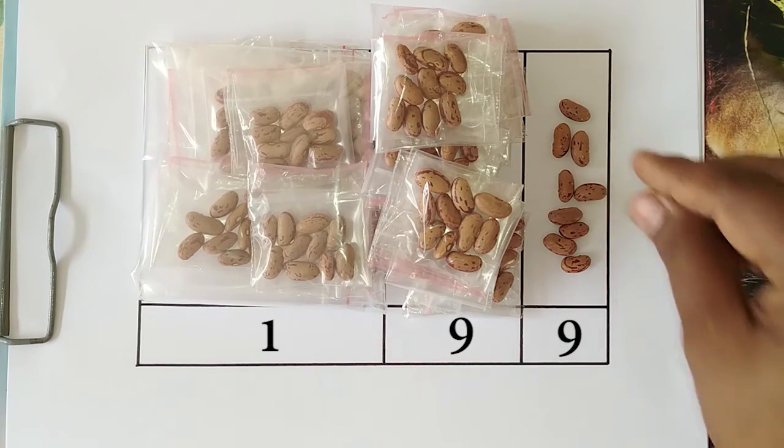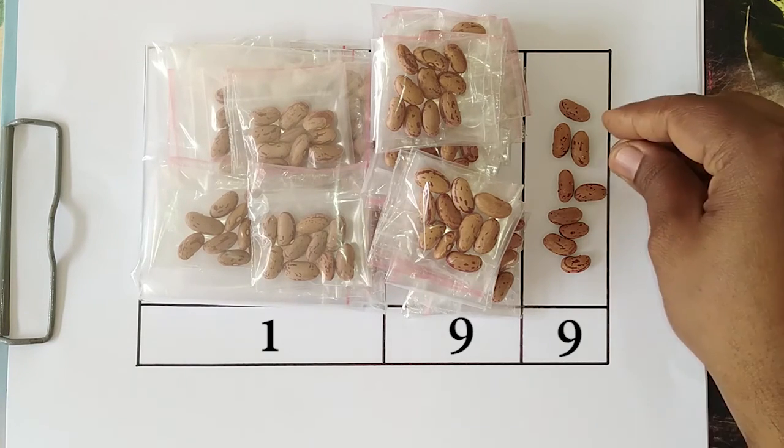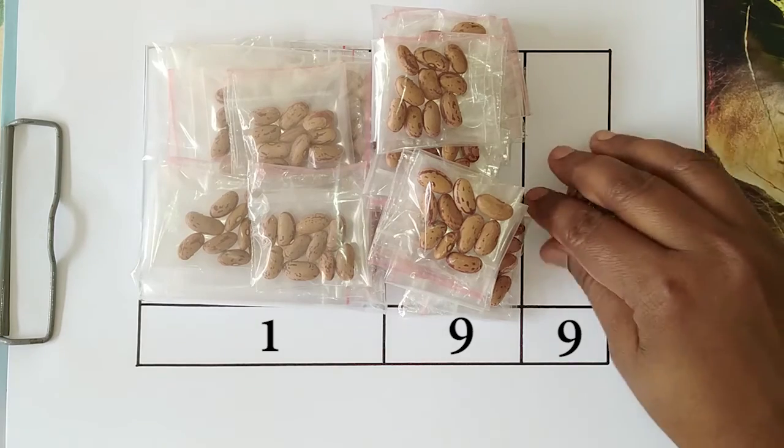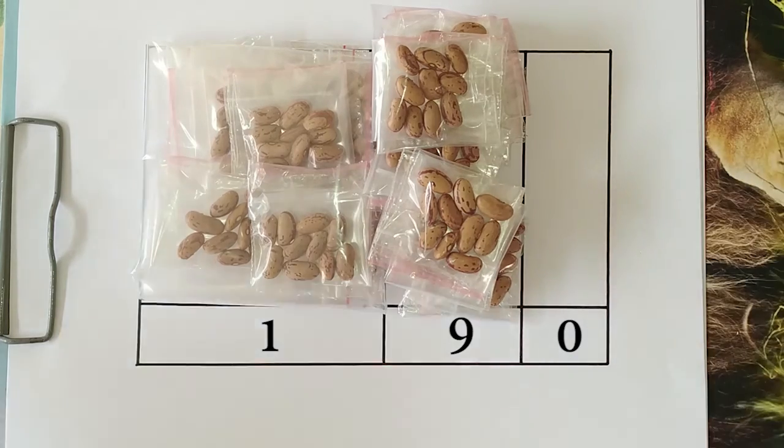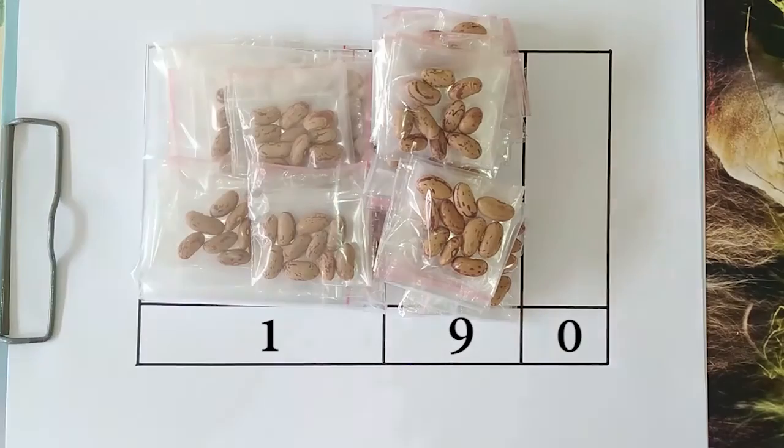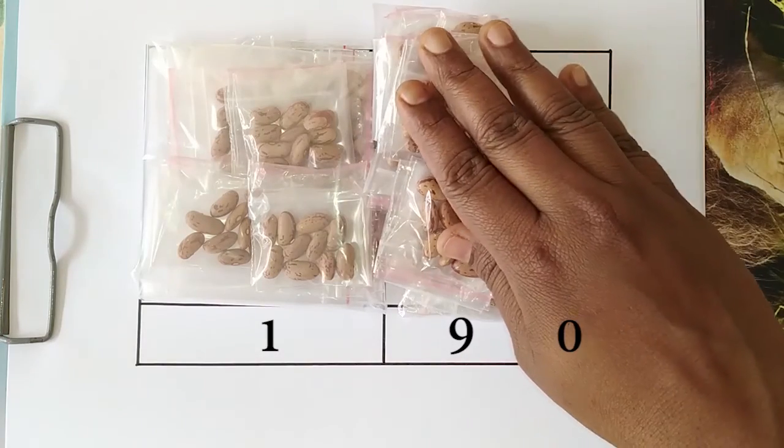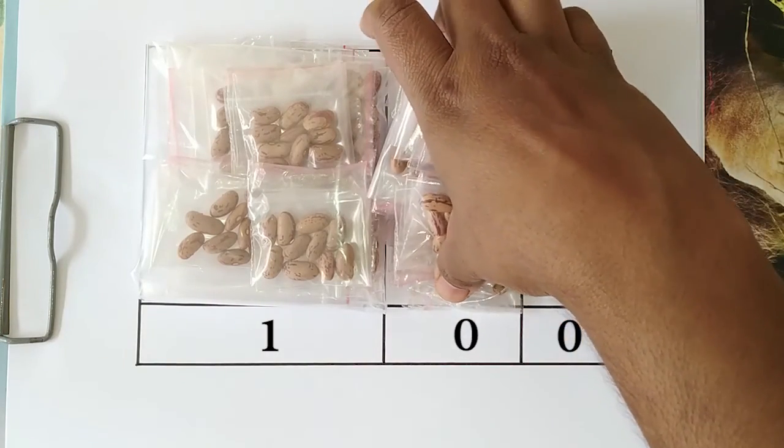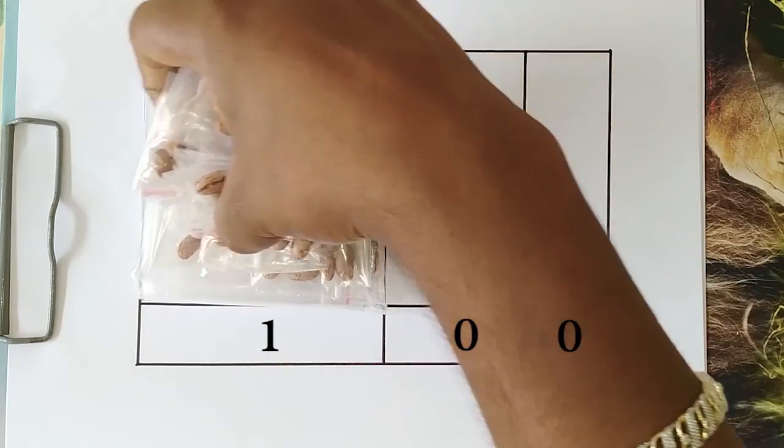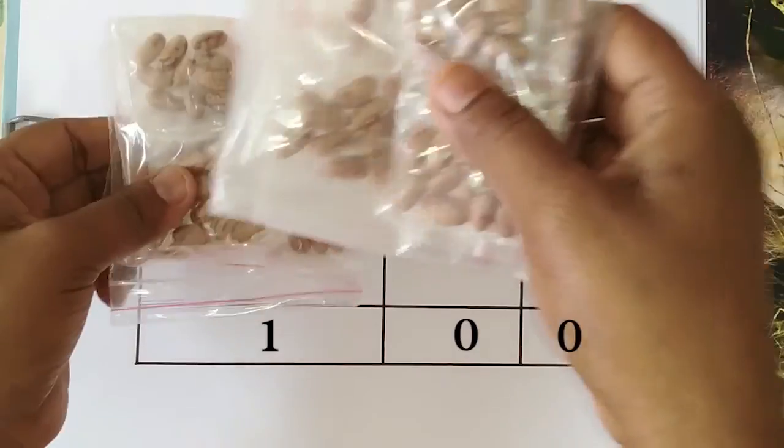Now, when we add one more bean, because there are 10 beans, we move it to the left side and put it in a small bag. And again, we get 10 small bags in the middle column. So, what do we do? We move all the 10 bags to the leftmost column and we put it in another larger bag.